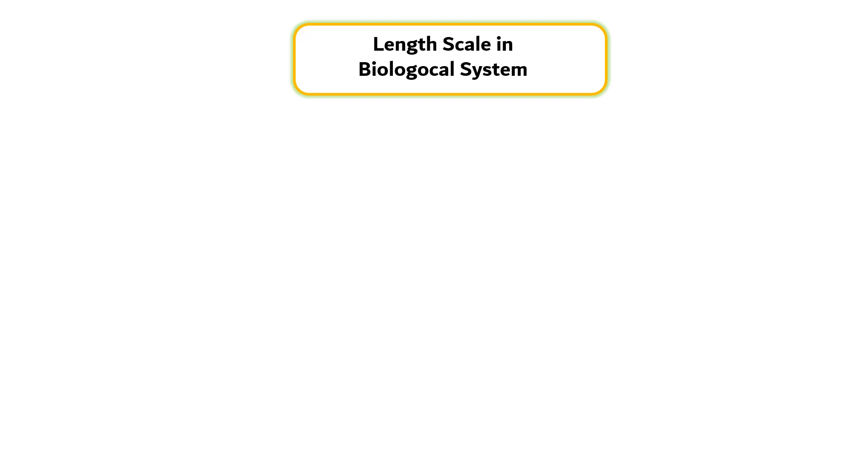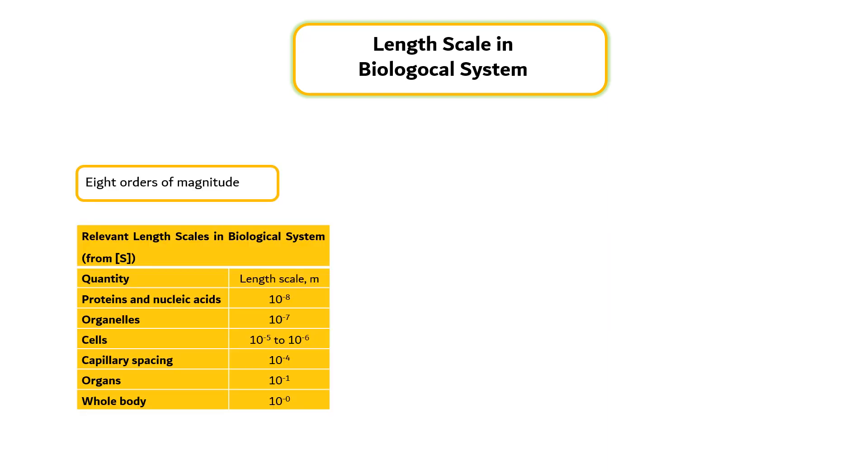Length scales in biological systems range over 8 orders of magnitude as shown in this table. No single transport process can function efficiently over these length scales. At short distances, diffusion can be quite rapid.